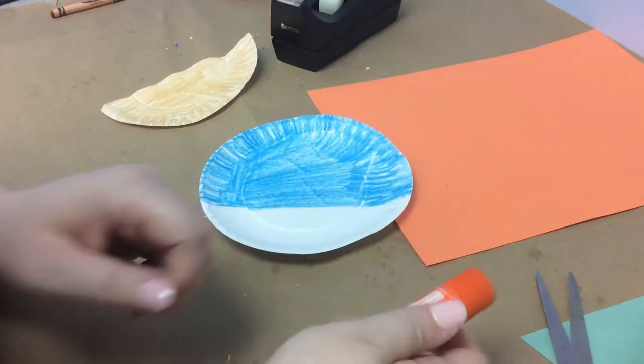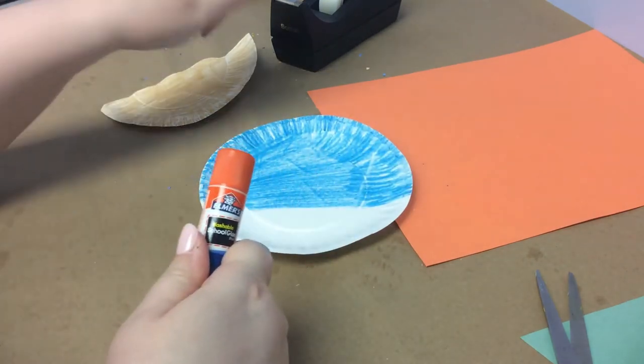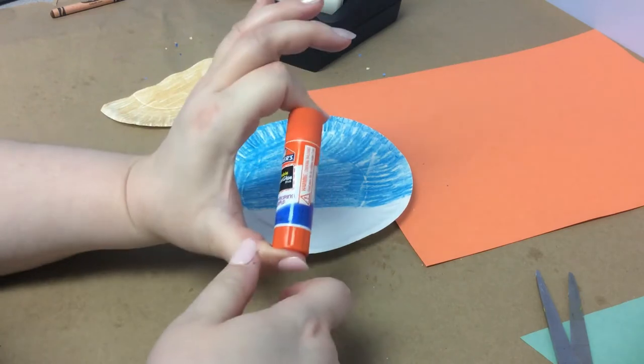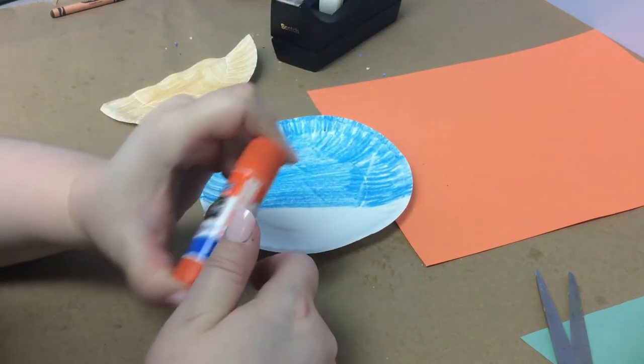I did forget to mention you also need a glue stick for this, as well as the tape just depending on how you're attaching things. But for the carrots, you definitely need the glue stick. You don't want to use tape for that.